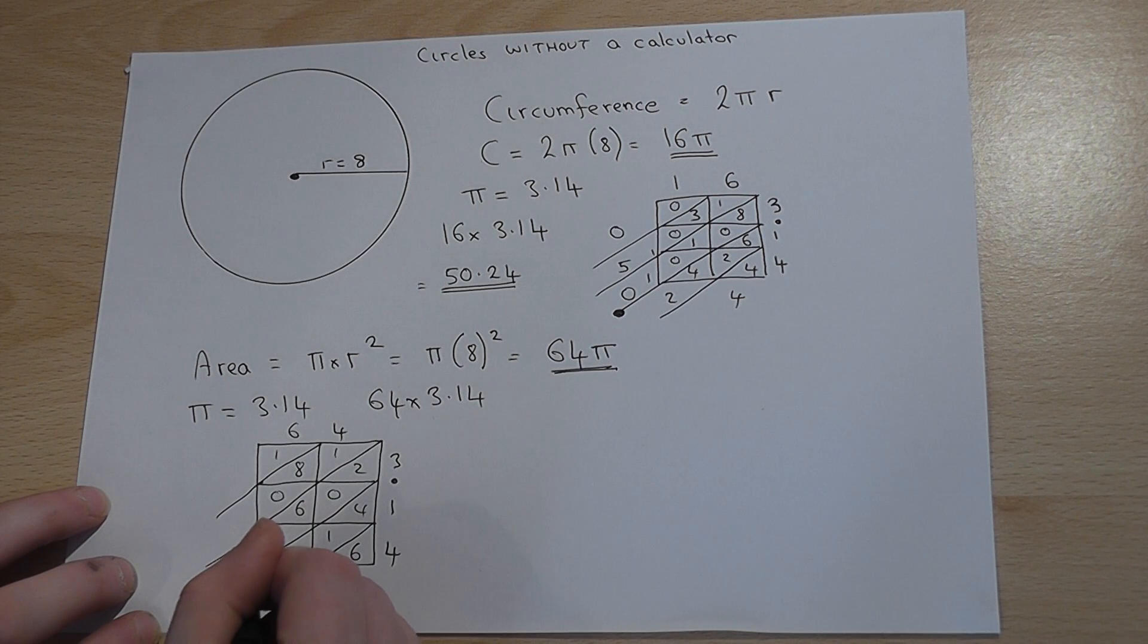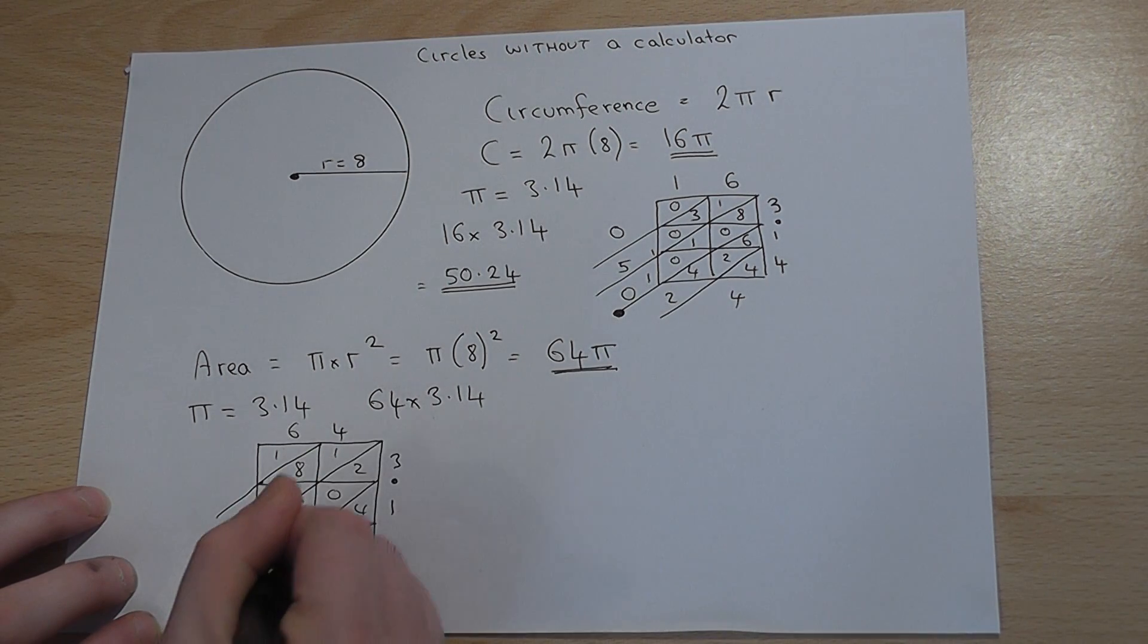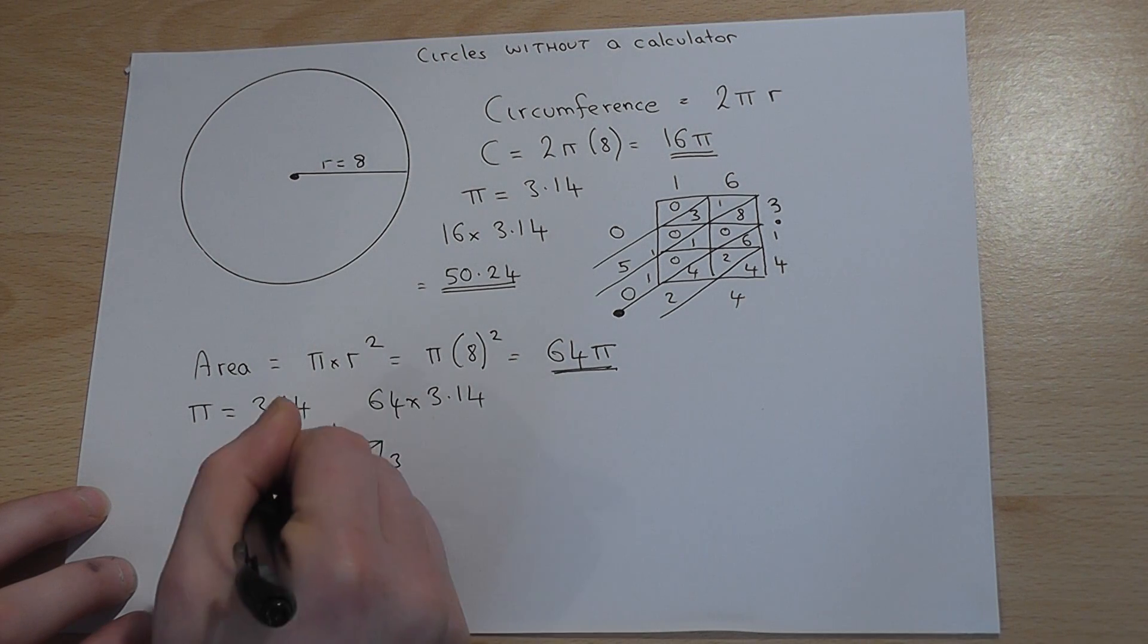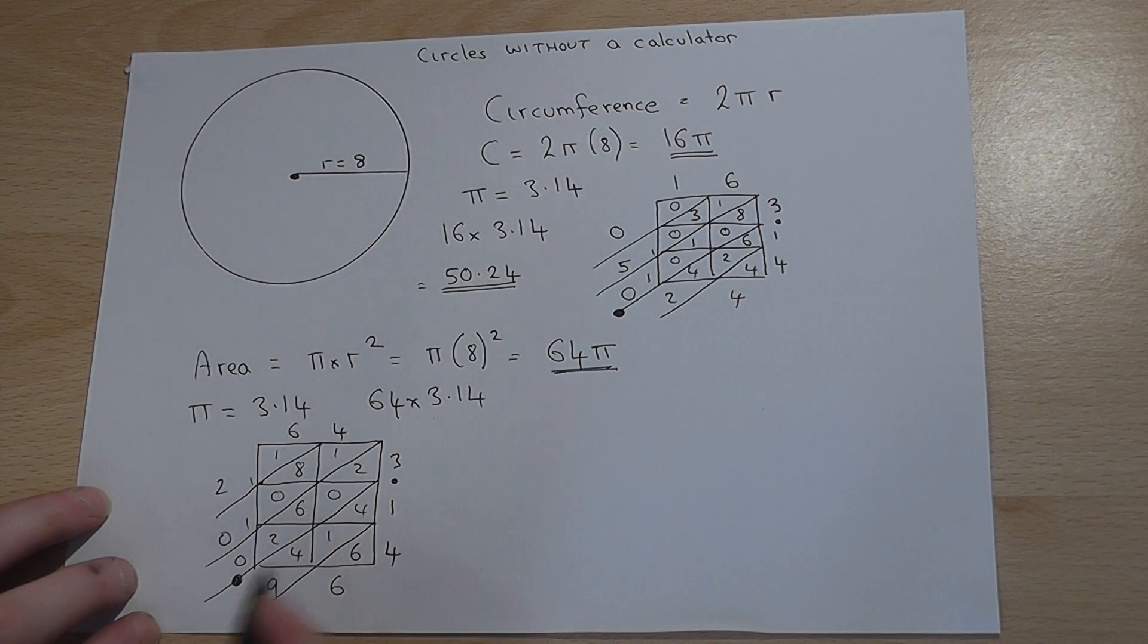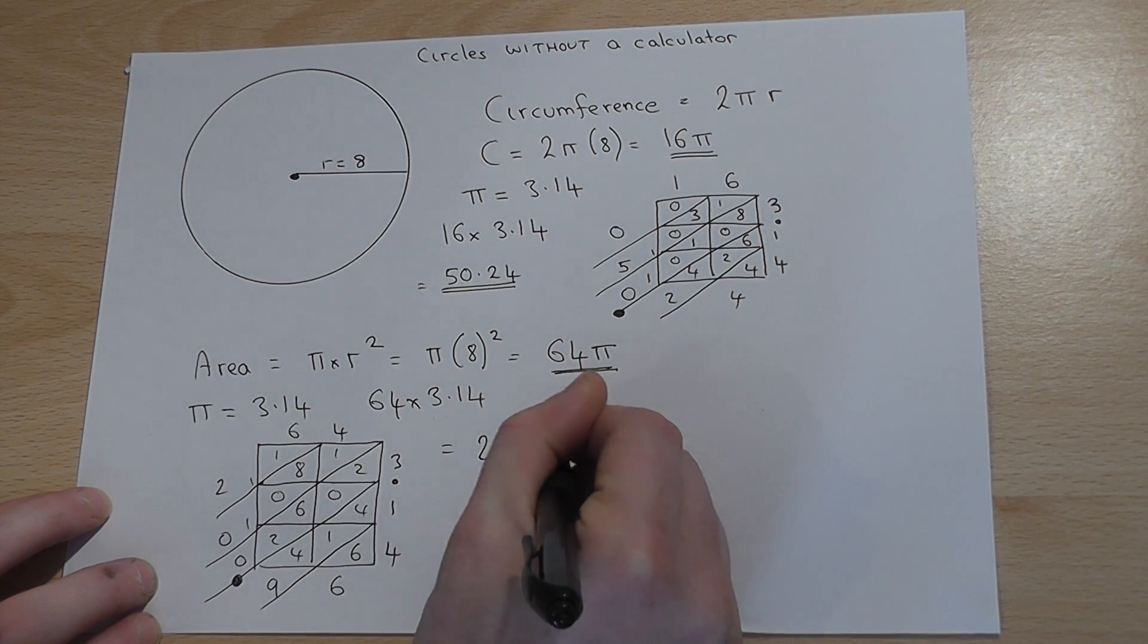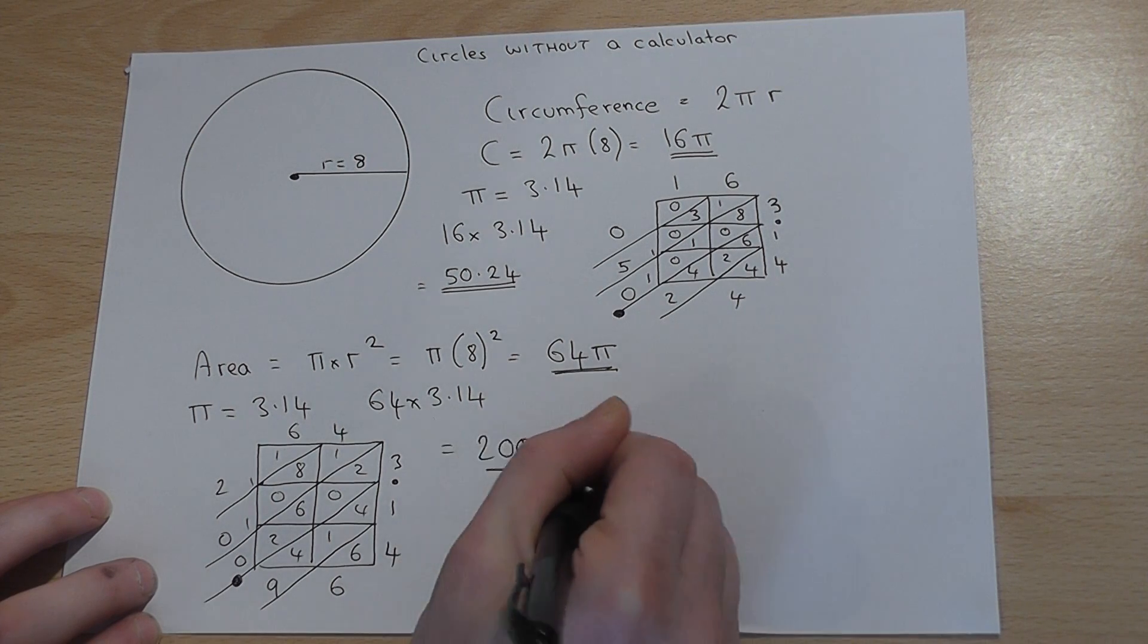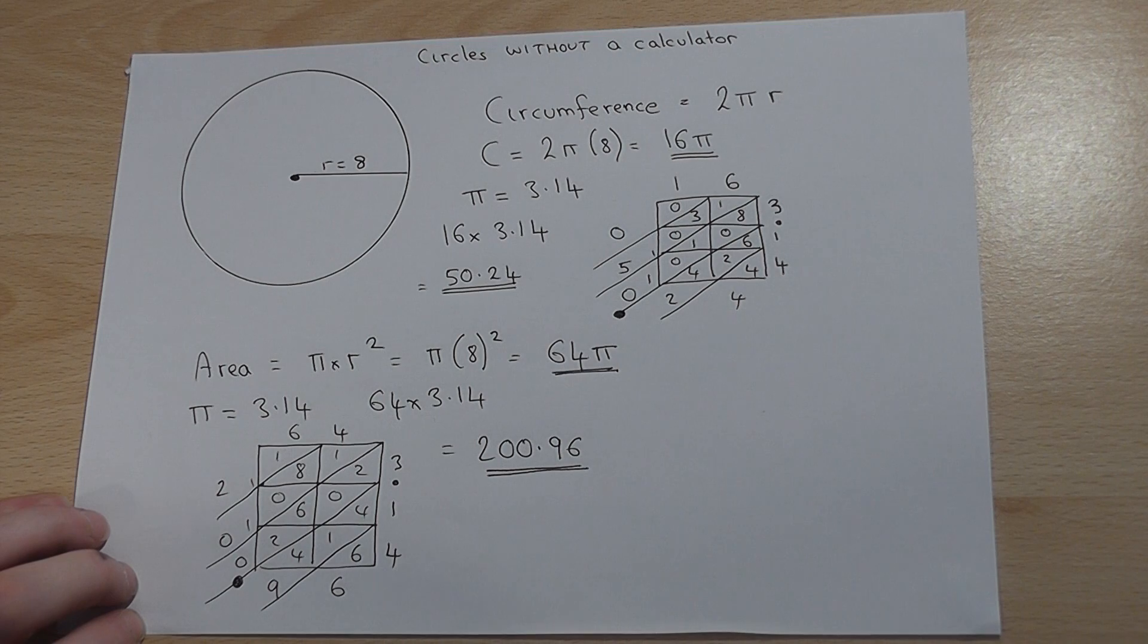The dot goes down here. 6, 9, 6, 2, 2 is 10, carry the 1, 10 again, carry the 1, 2. Therefore, the answer is 200.96 to 2 decimal places.